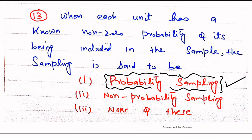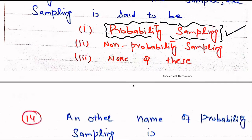Question number 13. When each unit has a non-zero probability of being included in the sample, the sampling is said to be — Probability sampling, Non-probability sampling, or None of these. The right choice is Probability sampling. When each unit in a population has an equal probability of being selected, such sampling is probability sampling.